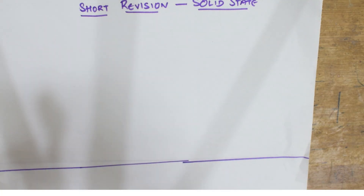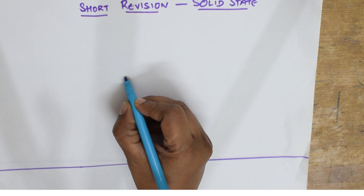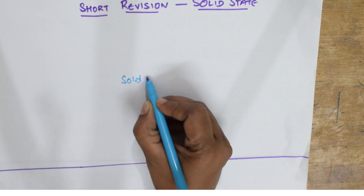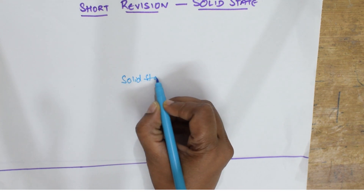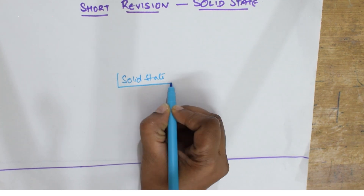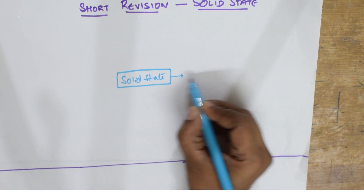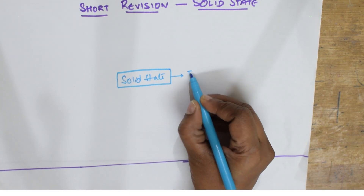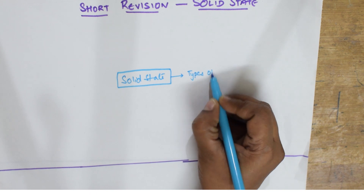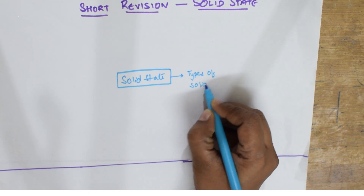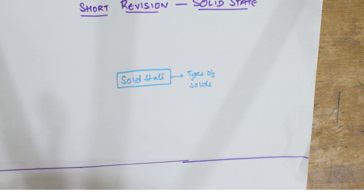In solid state chemistry, the first important topic to remember is types of solids. Basically, solids are divided into two main varieties.